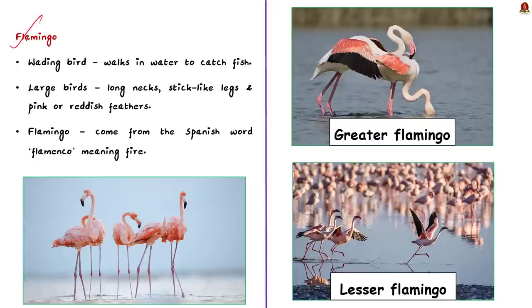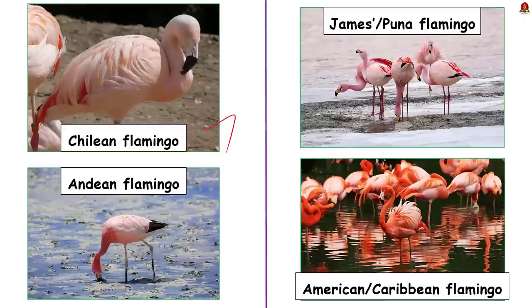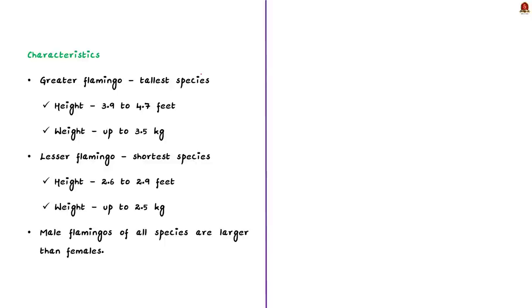A flamingo is a type of wading bird — a long-legged bird that walks in water to catch fish. They are large birds identifiable by their long necks, stick-like legs, and pink or reddish feathers. The word 'flamingo' is said to come from the Spanish word 'flamenco,' meaning fire, referring to the bright pink or orange color of their feathers. There are six major species of flamingos: Greater Flamingo, Lesser Flamingo, Chilean Flamingo, Andean Flamingo, James's Flamingo, and American Flamingo. The Greater Flamingo is the tallest, growing to 3.9–4.7 feet and weighing up to 3.5 kg.